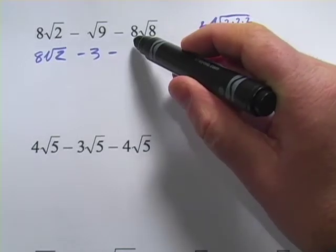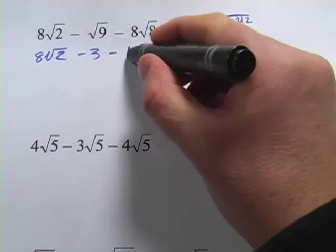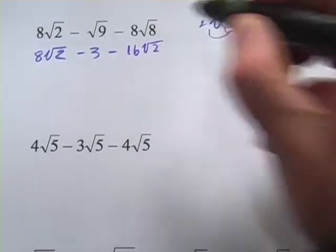We have to multiply it by the 8 that's already there. So 8 times the square root of 8, when we take this 2 out, becomes 16 times the square root of 2.